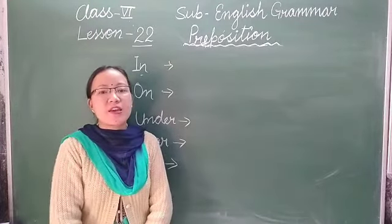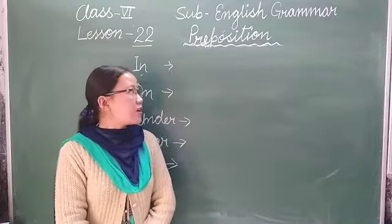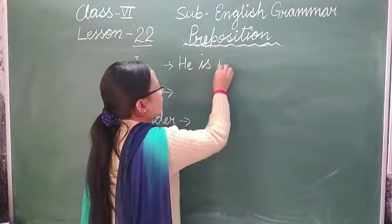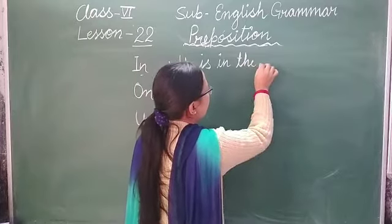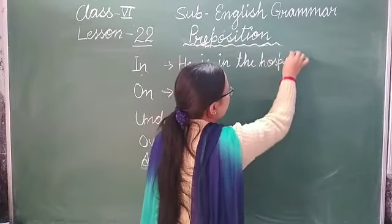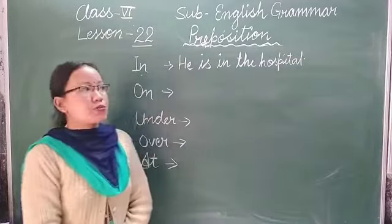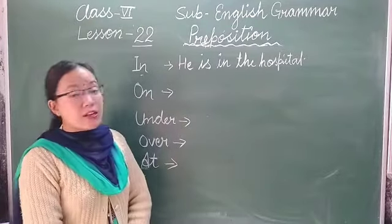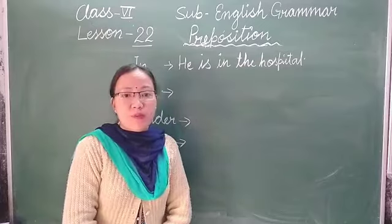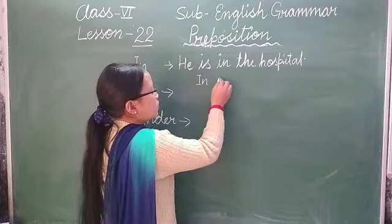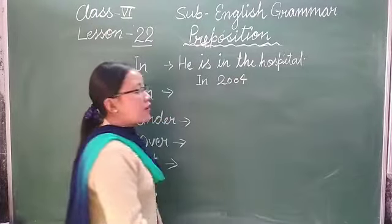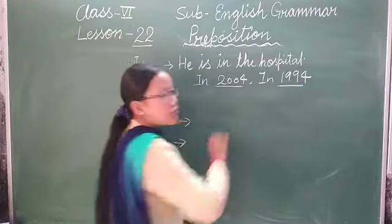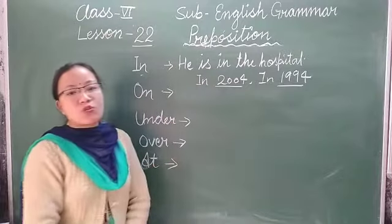'He is playing in the ground' is used when the ground is covered on all sides. Similarly, 'He is in the hospital' — the hospital is enclosed and he is inside it. Secondly, 'in' is used before years — as a preposition of time — for example: 'in 2004' or 'in 1994'.